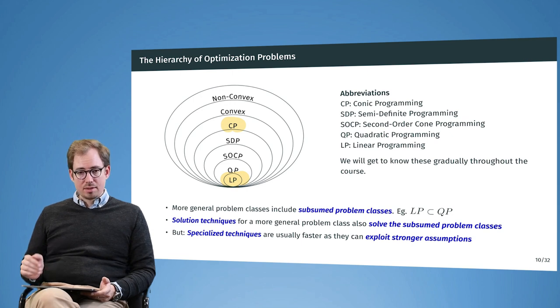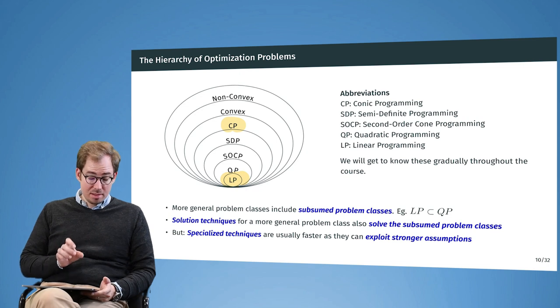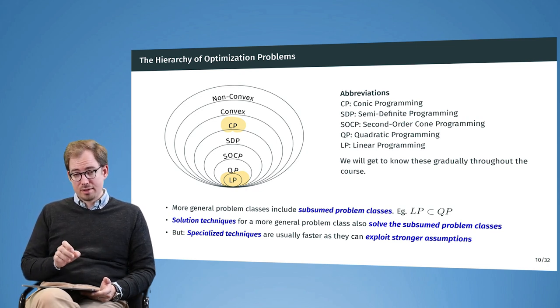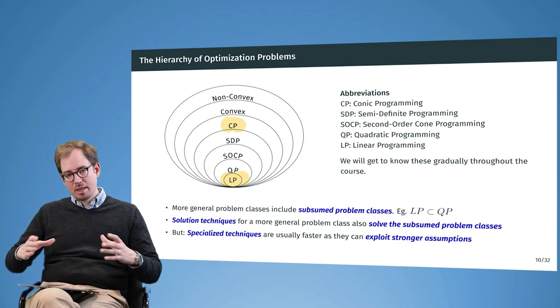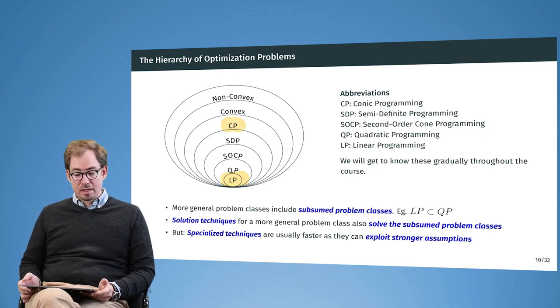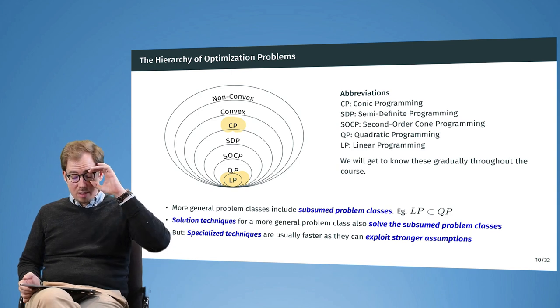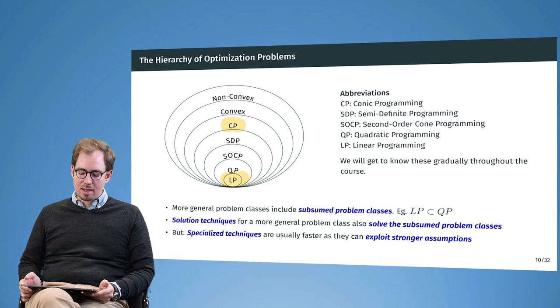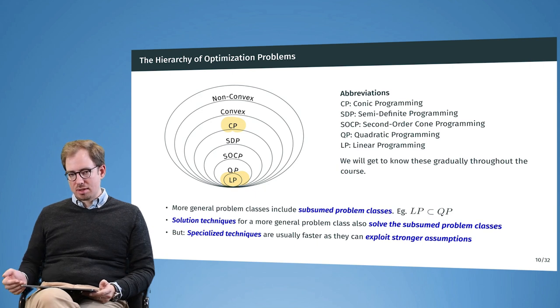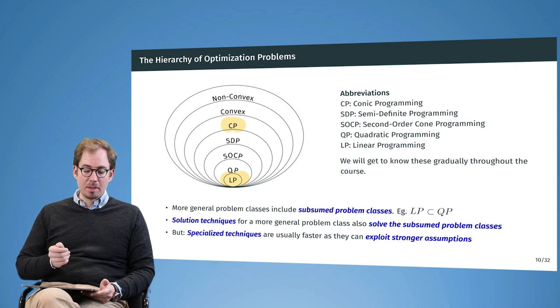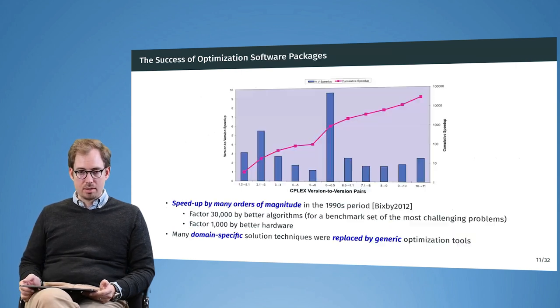The solution techniques that are developed are exploiting as much structure of the problems as possible. For the LP, so the easiest problem, we have the most structure that we can exploit and the fastest solution algorithms that can be designed. Then going up in the hierarchy, we have less and less exploitable structure, and therefore the algorithms are also generally getting slower. But the algorithms are getting faster every year. There has been a huge development that has happened over the last 25 to 30 years. We are many orders of magnitude faster today than we were a couple of years back. That means that also a lot of specialized solution techniques that some application domains might have developed, today they are completely replaced by some of the general optimization tools that we will see later in the course.